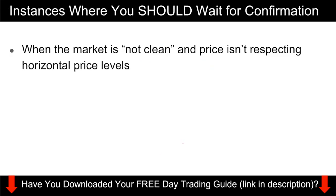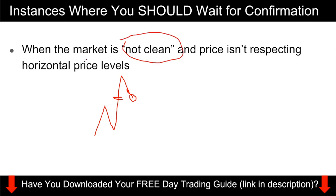Let's go through the first instance where you should wait for confirmation — meaning you want to wait for price to come to your level. Let's say price is going up and you predict that a certain level is a good level to buy. You just wait for price to come to that level and watch the reaction there. Confirmation means you watch for price action at that level to decide if that level is going to hold or not. You use this when the market is not clean and the horizontal price level is not holding properly.